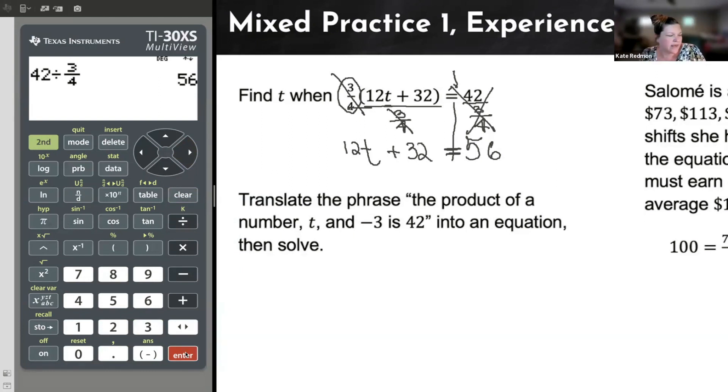Now this is just a nice two-step equation. We can handle this. We work that order of operations backwards when we're solving, of course. And so we can get rid of anything adding or subtracting now that it's been freed out of that grouping. Adding 32 and subtracting 32 cancel. And so all that's left on my left hand side is that 12t.